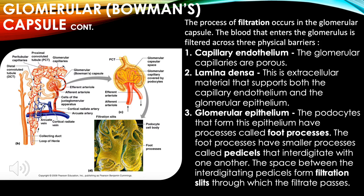The process of filtration occurs in the glomerular capsule. Blood entering the glomerulus is filtered across three physical barriers: first, the capillary endothelium — the glomerular capillaries are porous; second, the lamina densa — the extracellular material supporting both the capillary endothelium and glomerular epithelium; third, the glomerular epithelium — podocytes whose foot processes have smaller processes called pedicels that interdigitate with one another.